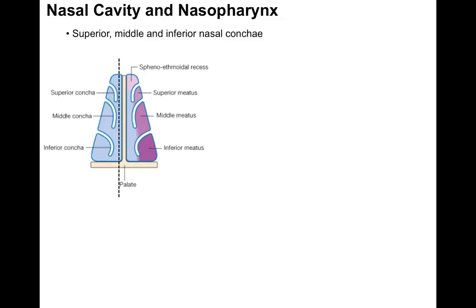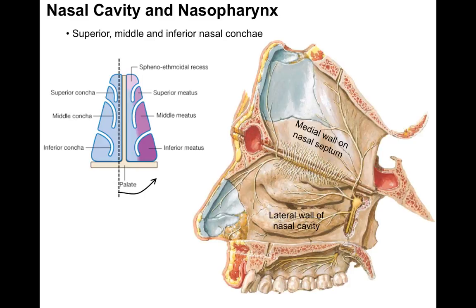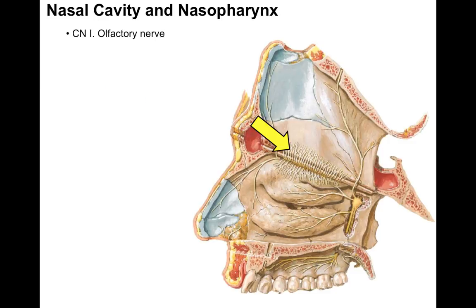Now what we're going to do is take this coronal section — the dotted line represents the section — and open it up like a book. Here we have a view that Frank Netter illustrates. There's the medial wall of the nasal septum and the lateral wall of the nasal cavity. On the lateral wall is a superior nasal concha, a middle nasal concha, and an inferior nasal concha, just as shown in the coronal section.